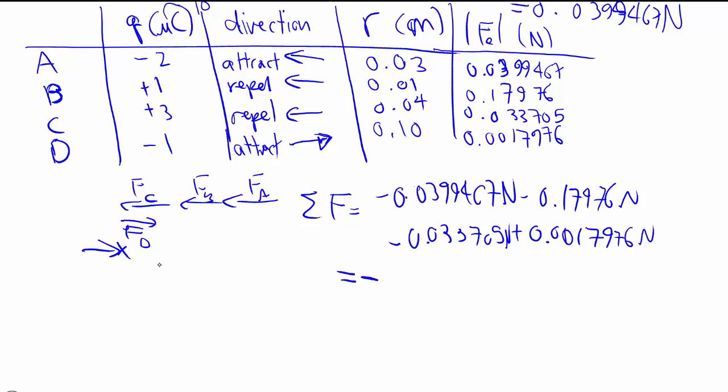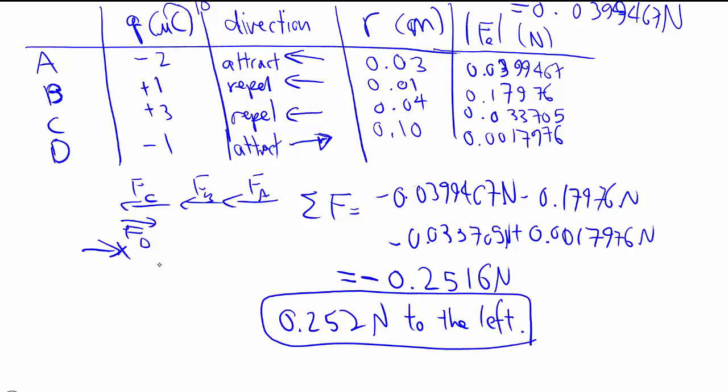When we work it all out, we'll get negative 0.2516 newtons, which then we can say that much force to the left. So just like all forces, you have to respect the direction because force is a vector. So typically what we do is, based on the position of the charges and the size of the charges, we can work out the direction first, separately from the magnitude. The magnitude we will use our KQQ over our square.